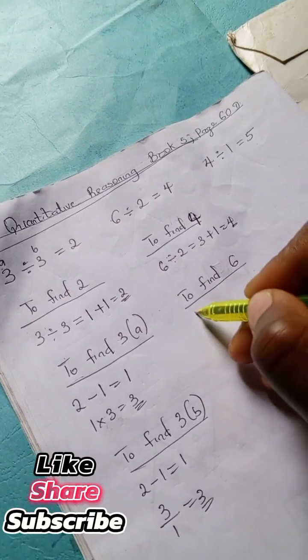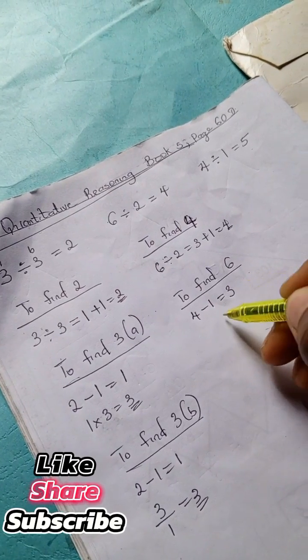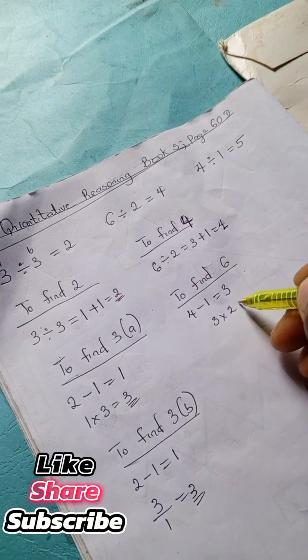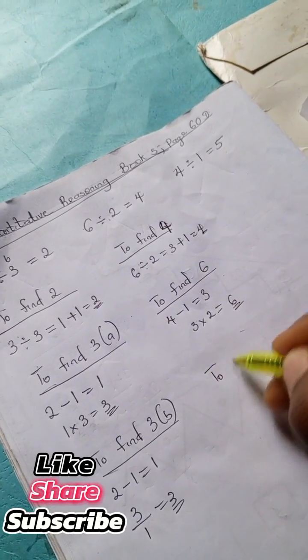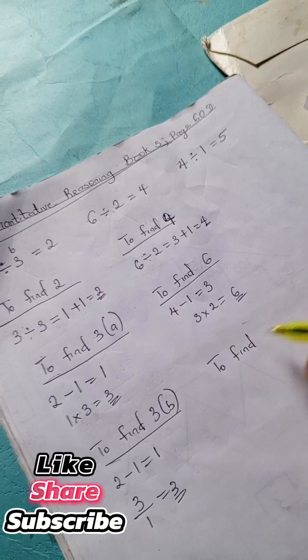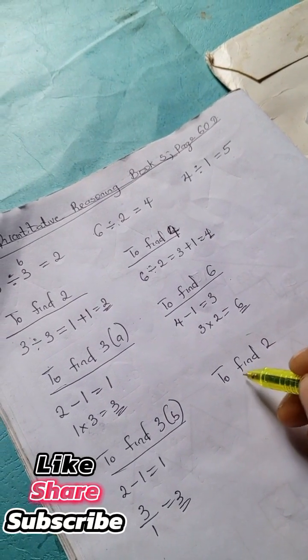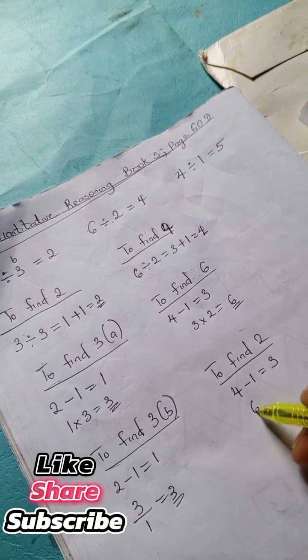And to find the next number which is 2, we have our 4 minus 1 is 3, and 6 here divided by this 3, we have our 2.